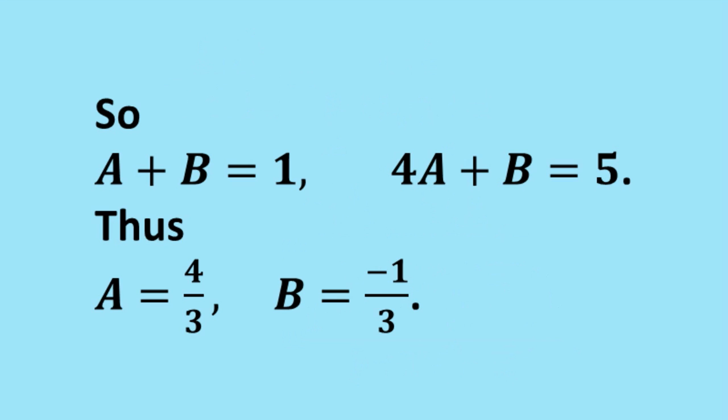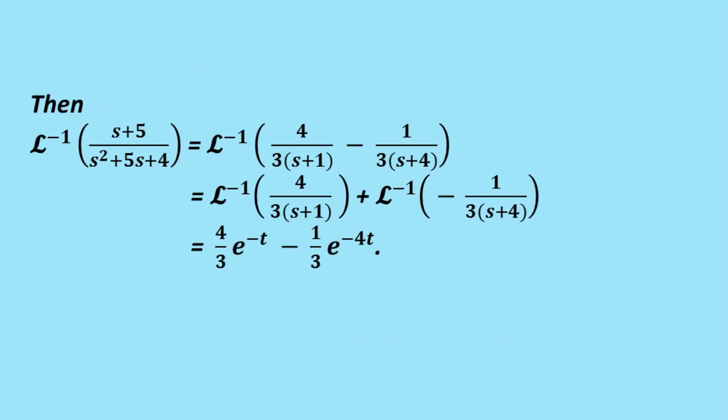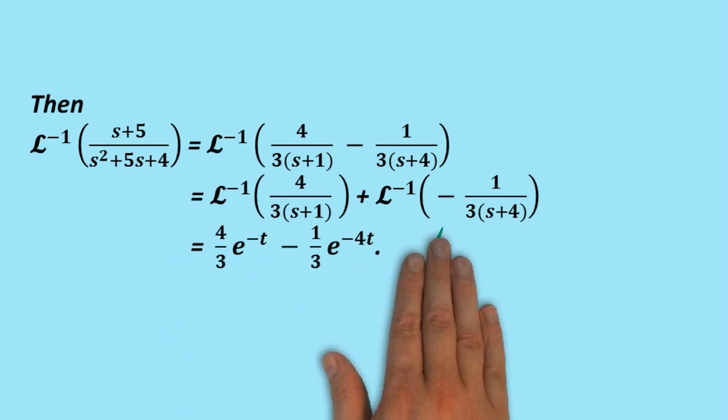Now to return to the problem, the inverse Laplace transform of the original fraction equals the inverse Laplace transform of what we've worked out from our partial fractions work. We can split that up into the two inverse Laplace transforms. The 4 thirds can come out the front. The inverse Laplace transform of 1 on s plus 1 is e to the minus t. And the inverse Laplace transform of 1 on s plus 4 is e to the negative 4t. That gives us our solution.